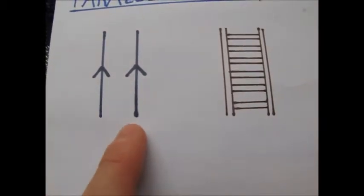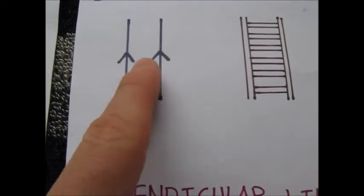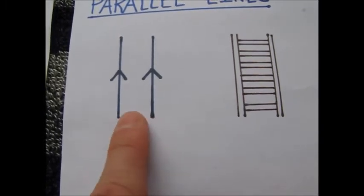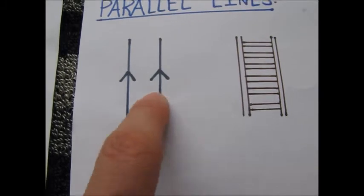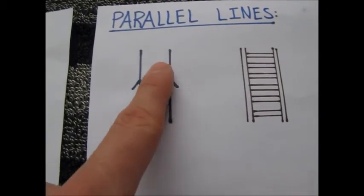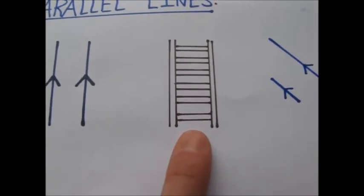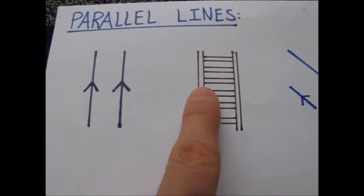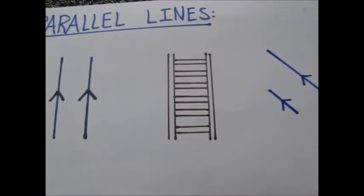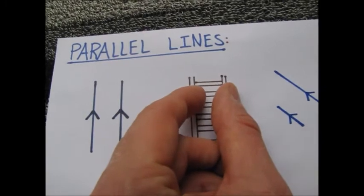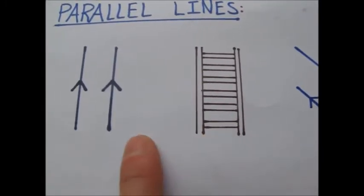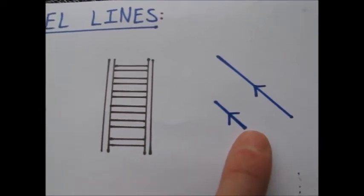These two lines here are going vertically up and have two arrows, which means these two sides are parallel — they are equal distance apart and will always be that distance apart no matter where the lines go. How I remember parallel lines is with train tracks: the two tracks are equal distance apart all the way through, because if they got wider or narrower the train would come off the tracks.